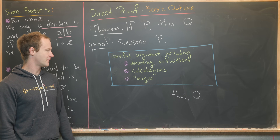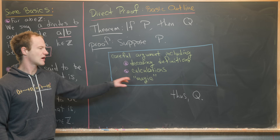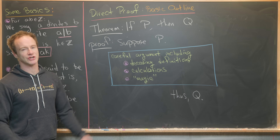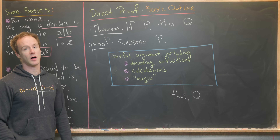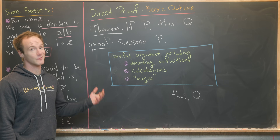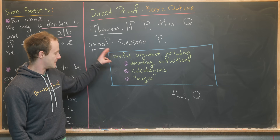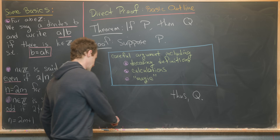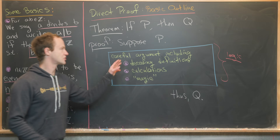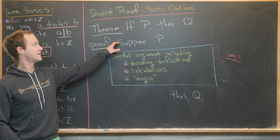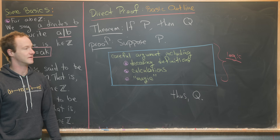You might also decode the definition of an odd number, or do some calculations. Sometimes you'll just have to play around with it — all proofs are different, and there's not really one outline that works for everything. The main idea is that these are all logical steps taking you from the 'if' part to the 'then' part of the statement.